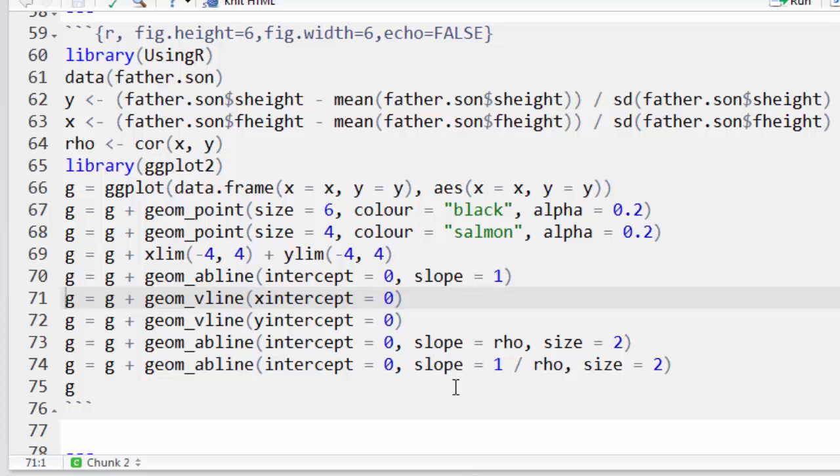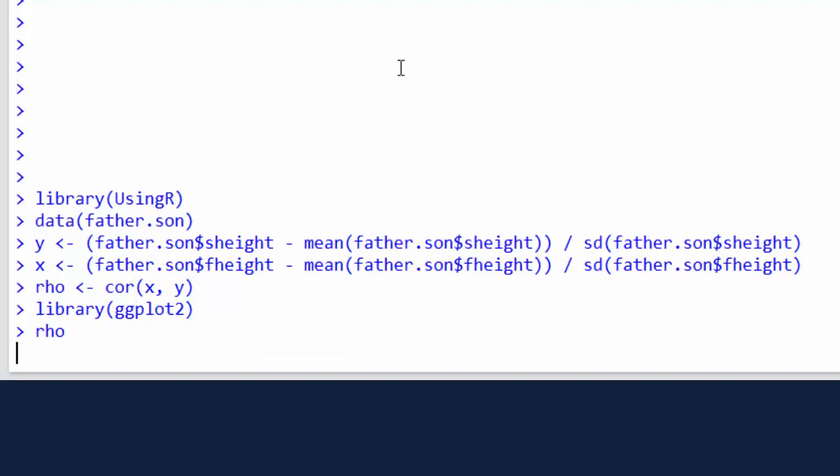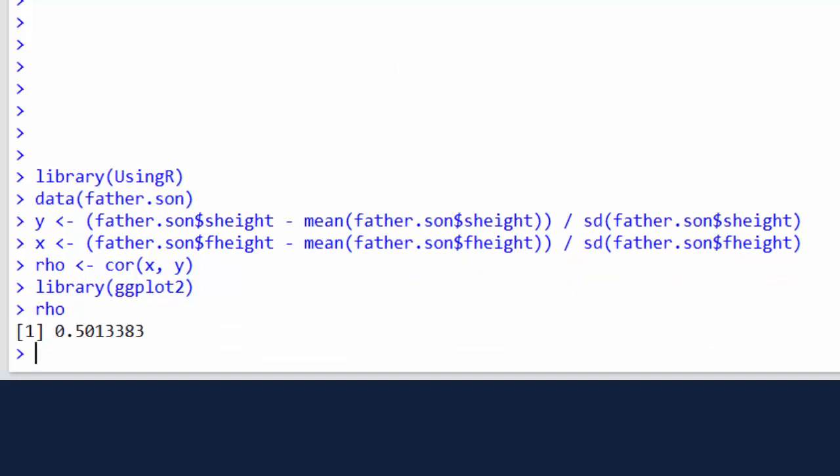So let's go through the code and how I'm creating my plot. The data set is in the usingR library, the data is father.son. I'm going to define my Y as the son's height, but I'm going to subtract out the mean and divide by the standard deviation. I'm going to define my X as the father's height, and I'm going to do the same. Now X and Y should both have mean zero and variance one. Rho is the standard Greek letter that we use to represent correlations. So I'm going to define Rho as my correlation between my X and my Y. I need to load ggplot2. And before I show you the plot, let's check a couple of things. Let's see what Rho works out to be. It works out to be about 0.5. So the correlation between the father's height and the son's height was 0.5.